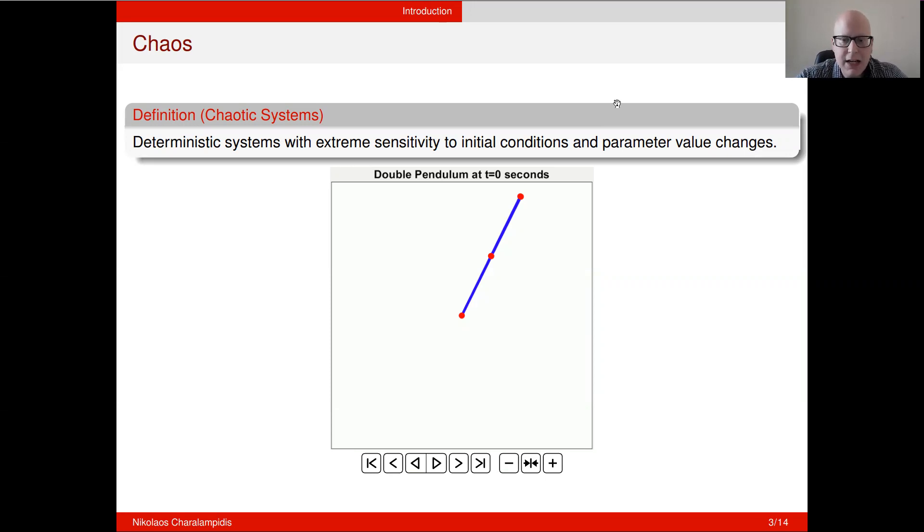To illustrate this, let's consider a very simple mechanical example of three inverted pendulums that start from almost the same initial conditions. And as you will be able to see, after two, three seconds later, the orbits of the pendulums start to diverge significantly from each other.